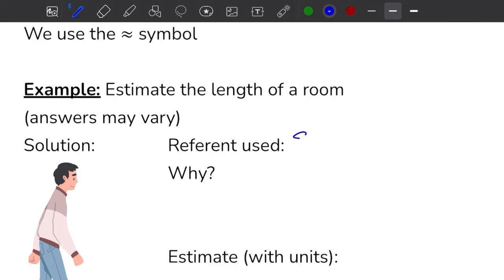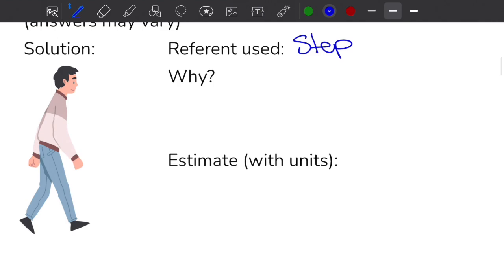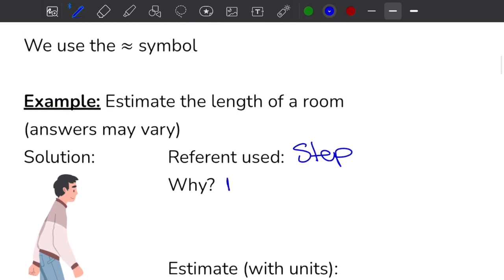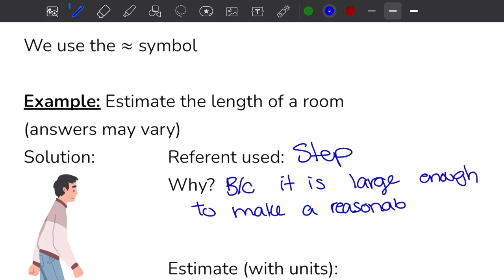For me, when I measured the distance of my step, it was about 70 centimeters. Why am I using a step? Because it is large enough to make a reasonable and accurate estimate. It's not too big and it's not too small.